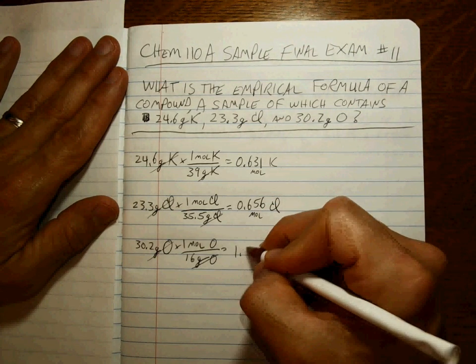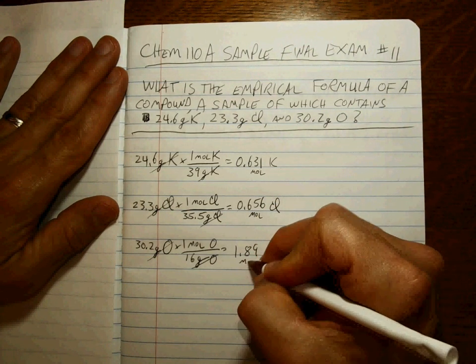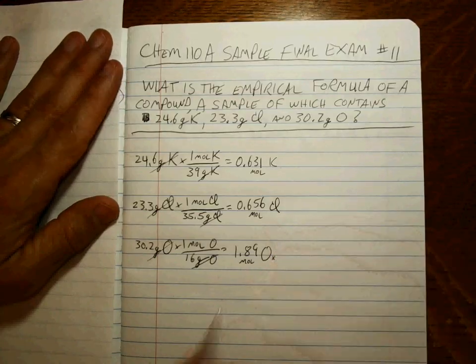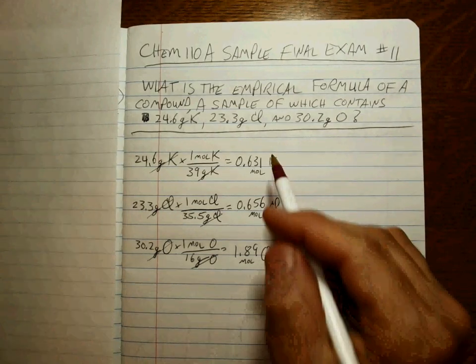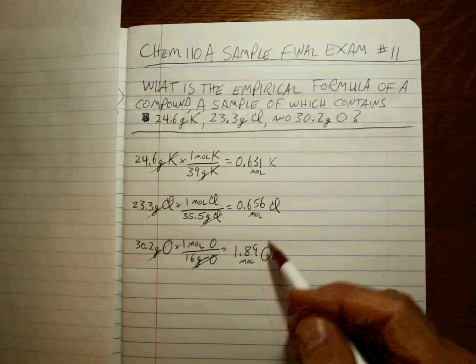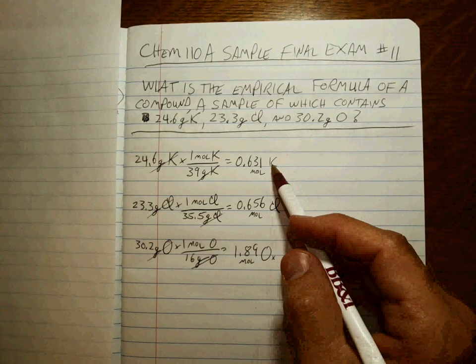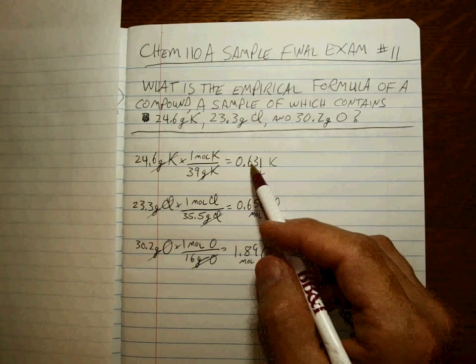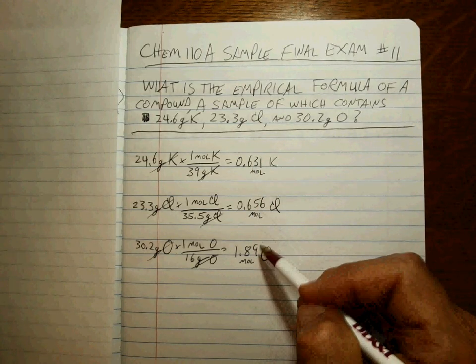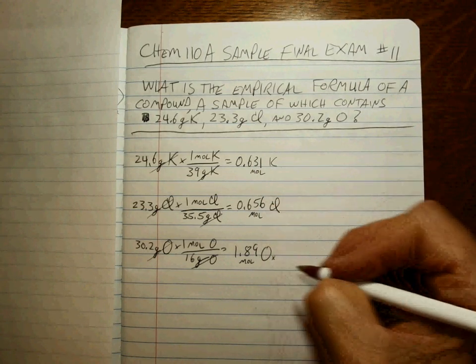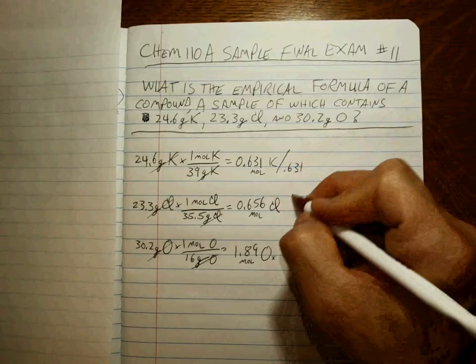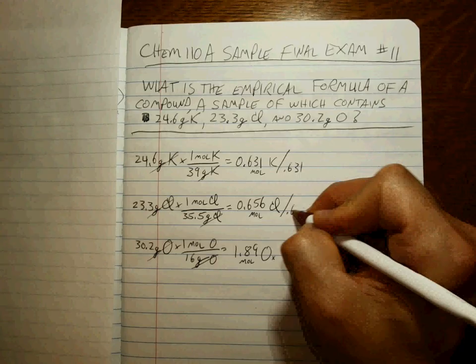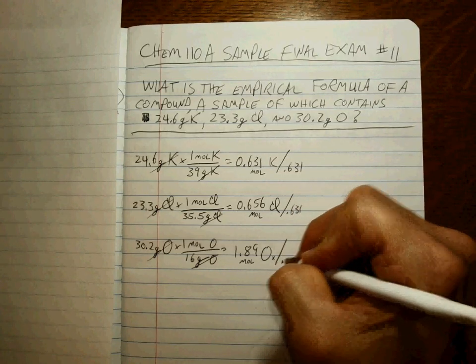Well, it's clear that that's not the ratio we can use because no compounds have decimals in their molar ratio, so we have to do the normalization step. Divide all by the smallest number of moles.